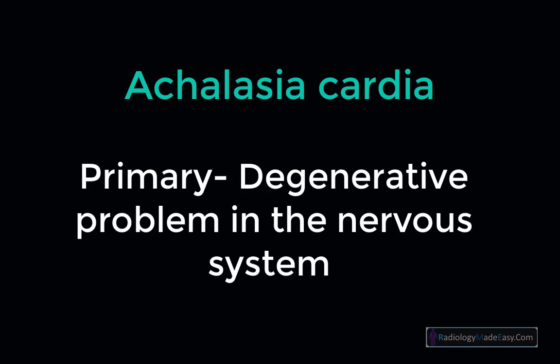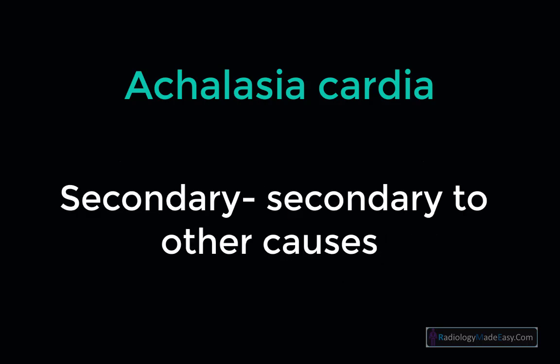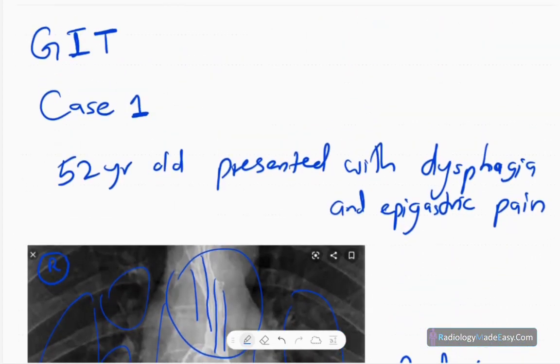Achalasia can be primary — a primary degenerative problem in the nervous system — or secondary to other causes. It is a correctable pathology surgically. Presentations include inability to swallow liquids; interestingly, solids may sometimes be swallowed but liquids cannot, or in some cases both liquids and solids cannot be swallowed. That concludes case number one in the GIT contrast studies series.